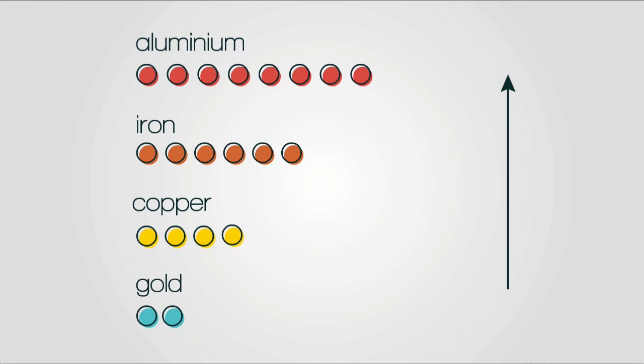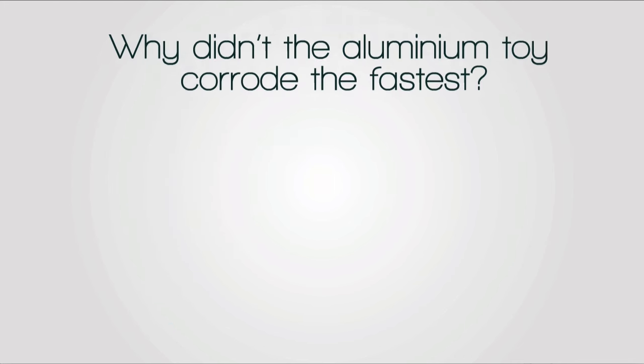The reason is the metals all have different reactivities. Iron corrodes faster because it is more reactive than copper and gold. But you may be wondering,